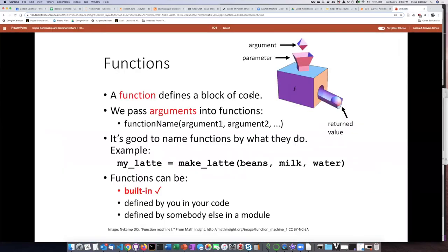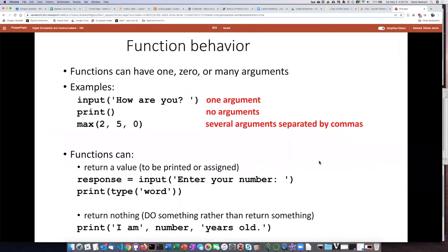Let's review some things relating to function behavior. Functions can have any number of arguments - they can have zero arguments, one argument, or many arguments. Here we see some examples.